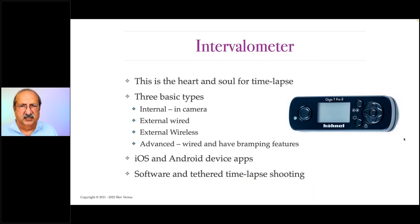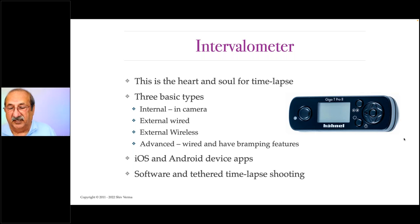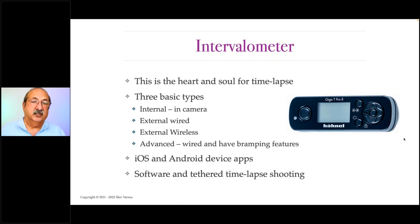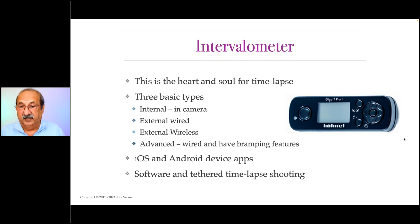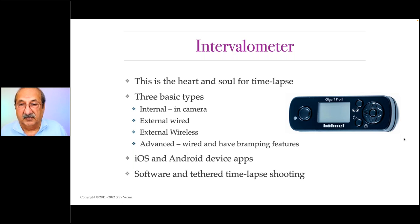Intervalometers are really the heart and soul for creating your time-lapse. There are multiple types. Cameras with built-in intervalometers work best because you don't have to carry an external device. If an external device is not wireless, you're going to have something dangling from your camera which can cause other issues. There are devices that allow you to do what's known as bramping, which are fairly advanced and expensive but do a phenomenal job. You can use software with your iPhone or Android phone. Or if you're doing a lot of sequential time-lapse indoors under controlled environments, use your computer through tethered shooting.